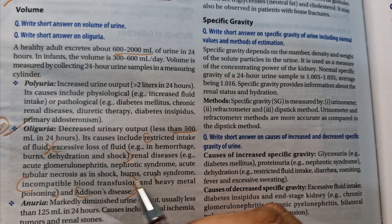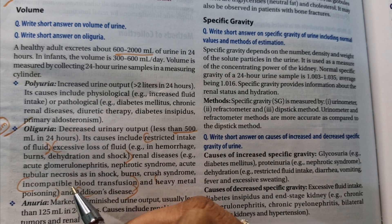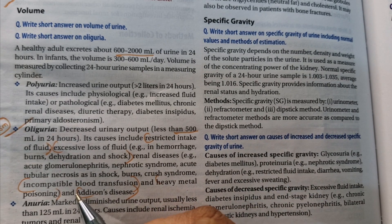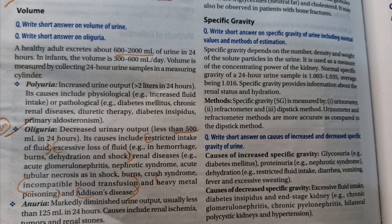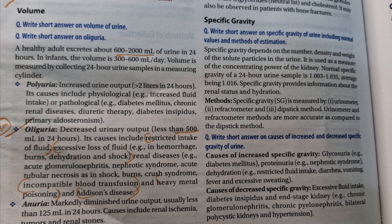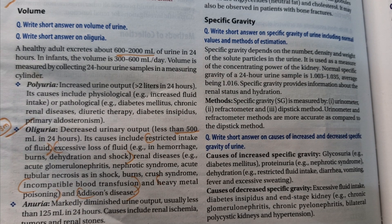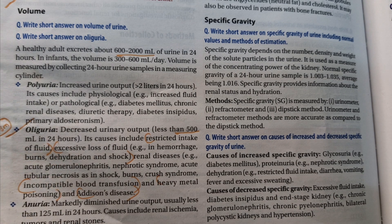Burns, Cushing syndrome, incompatible blood transfusion, metal poisoning, or Addison's disease — these are the conditions where you see oliguria. Oliguria is defined as urine output per day less than 500 ml. The causes and definition you write for a three mark question.